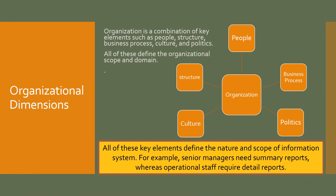Let's start with the organization dimension. What is an organization? It is a combination of different key elements: people, structure, business process, culture, and politics in business. How your organization operates in business depends upon all of these key elements. Similarly, the information system is affected by different combinations of these key elements.